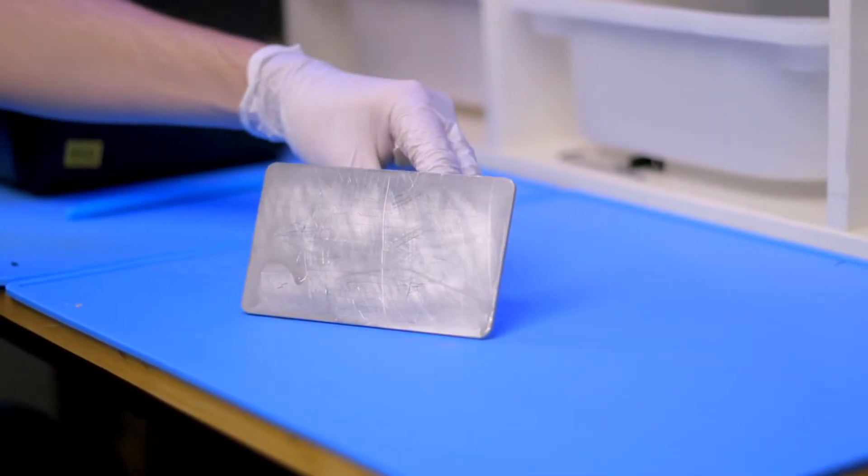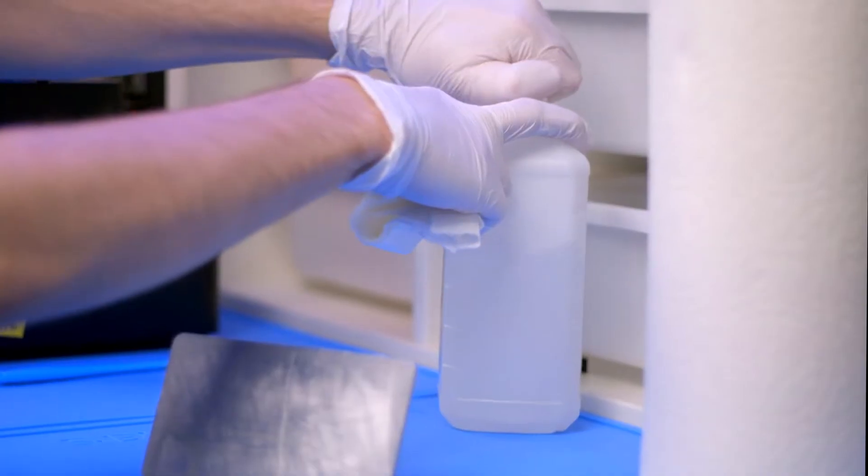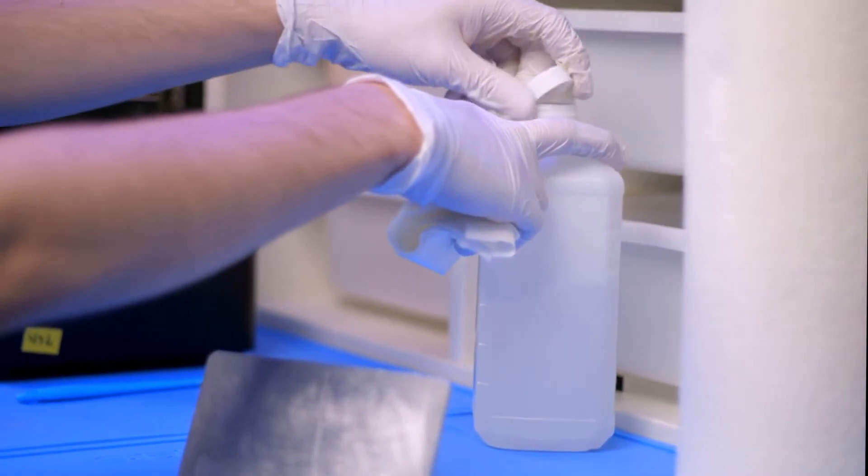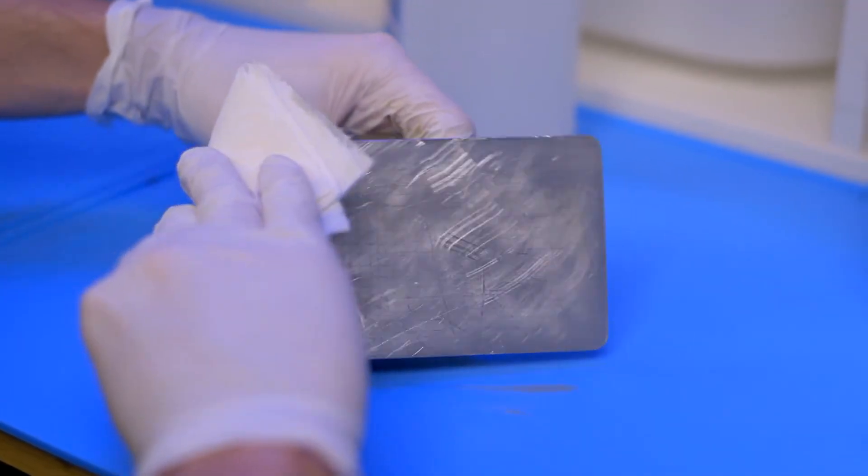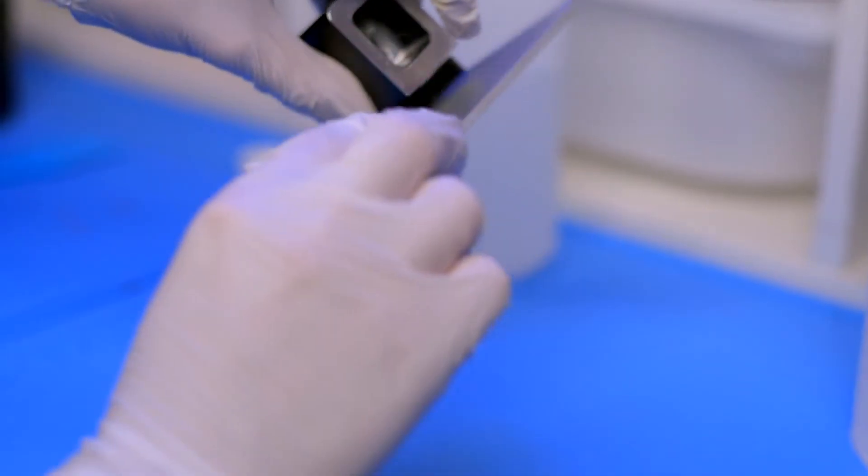Step 4: Once the build plate is mostly free of resin, set it on your protected surface and prepare a paper towel with isopropyl alcohol. Step 5: With a dry paper towel, wipe resin off of every surface of the build plate, from the printing surface to the clamping knob. Repeat as necessary.